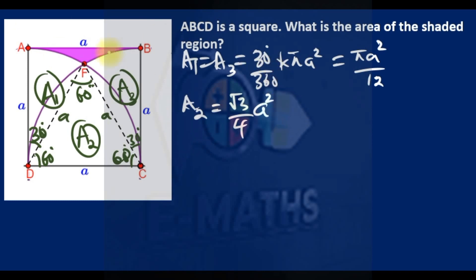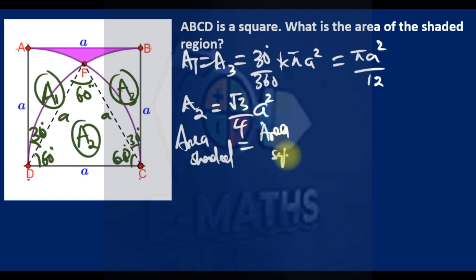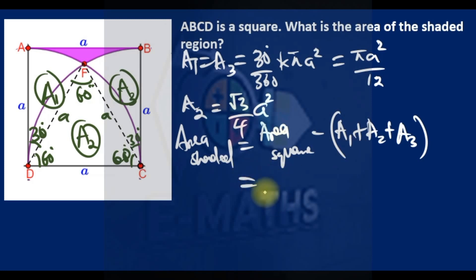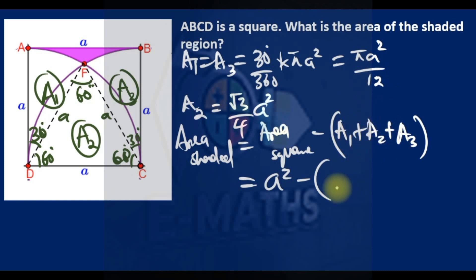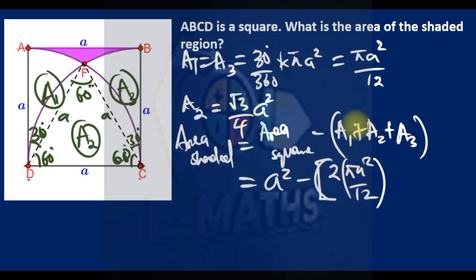Therefore, the area of the shaded region is the area of the square minus the sum of A1, A2, and A3. The area of the square is a². A1 and A3 are the same — same radius and central angle — so their combined area is 2 × πa²/12. A2 is √3/4 × a². So we have: a² − πa²/6 − √3/4 × a².